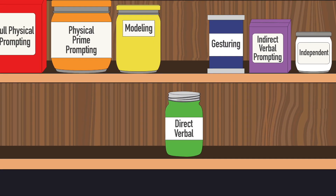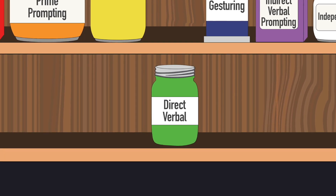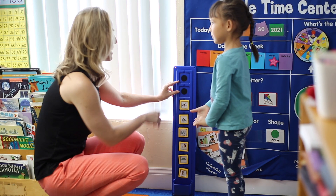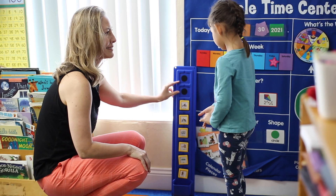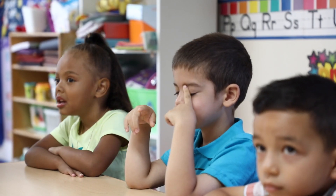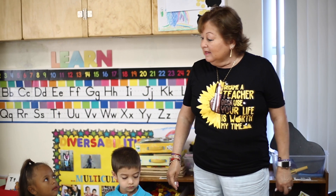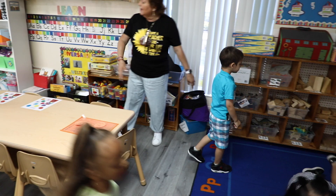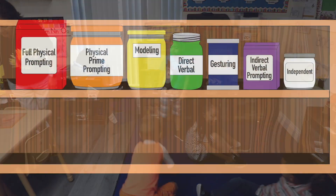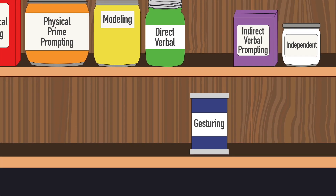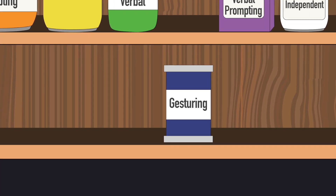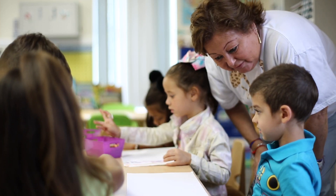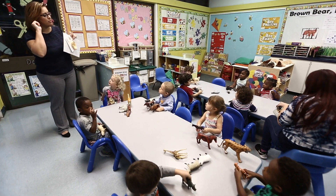Direct verbal: the child performs the task after explicitly being told what to do. For example, the teacher tells the child what he needs to do: "Everybody ready? We're going to move to the carpet." Gesturing: the child performs the task after the teacher points to an item, location, or a person. For example, the teacher points to her ear to imply it's time to listen: "And where are your ears? Touch your ears."